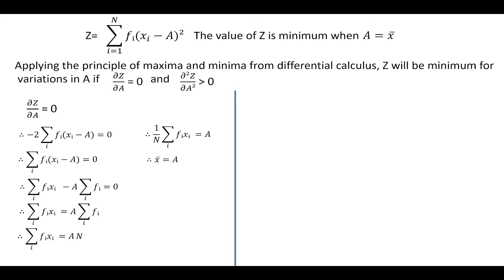Now let us see if dou square z by dou a square is greater than 0. On reducing it further, we get the value of dou square z by dou a square is equal to 2n, which is obviously greater than 0. Thus, the two principles of maxima and minima have been satisfied, and z will be minimum when a is equal to x bar.